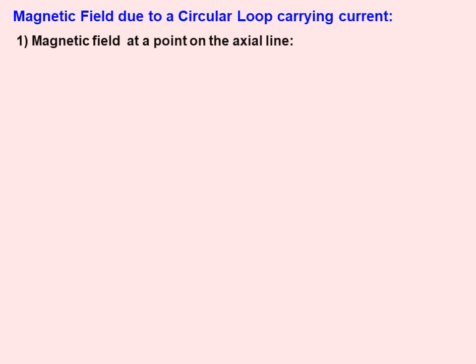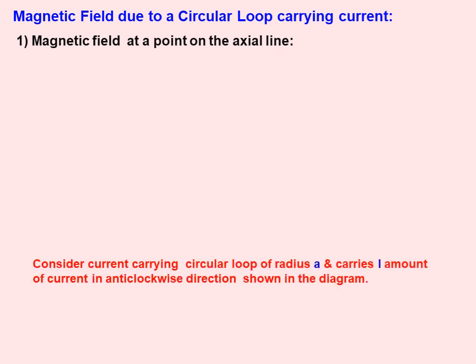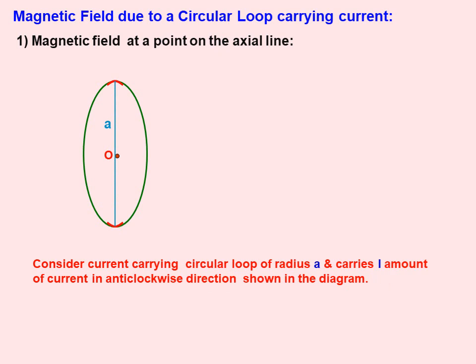Now, the first application of Biot-Savart's law: the magnetic field at a point on the axial line of a current-carrying circular loop. Consider a current-carrying circular loop of radius A, which carries current I in the anticlockwise direction. To find the magnetic field at any point P on the axis of the circular coil, consider point P at distance x from the center O of the circular coil.